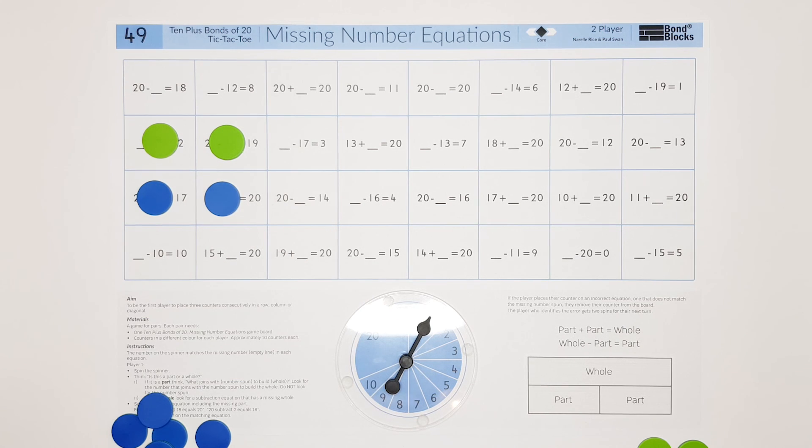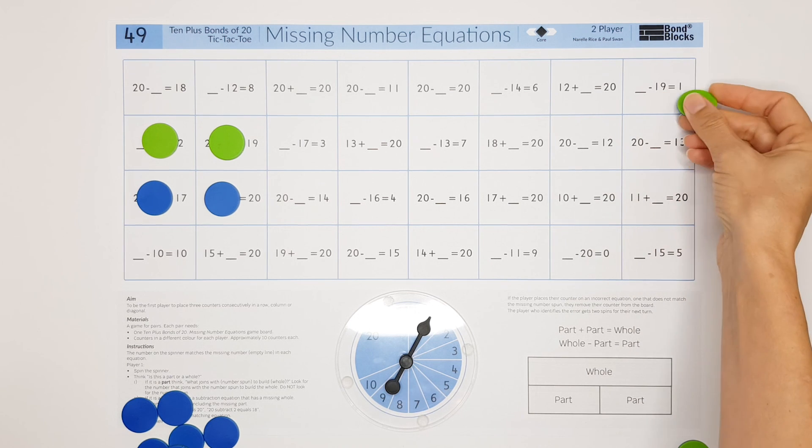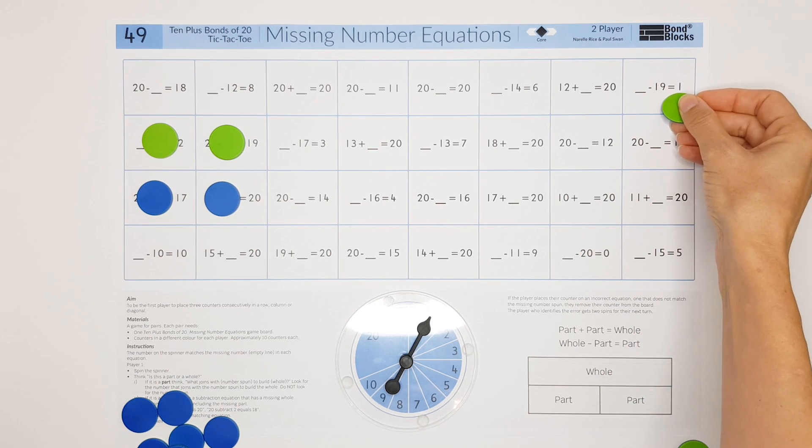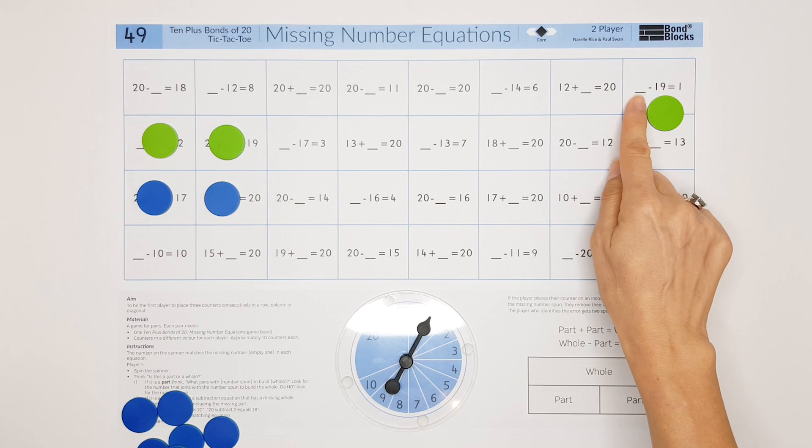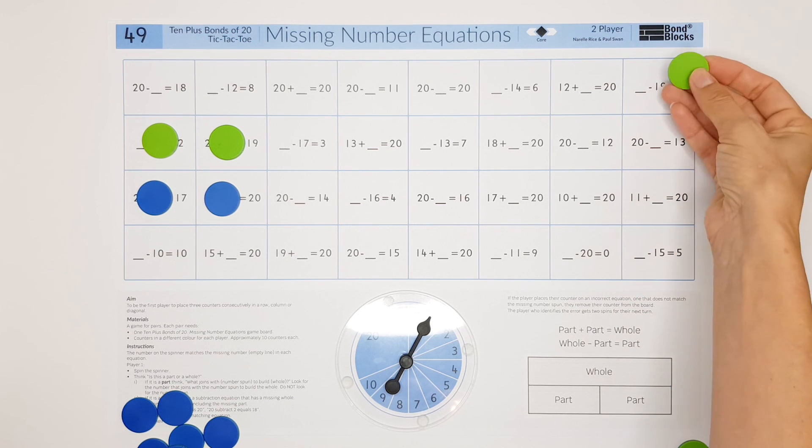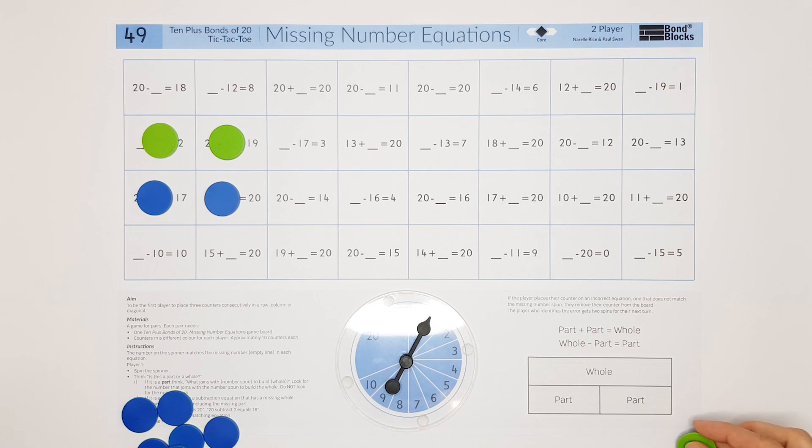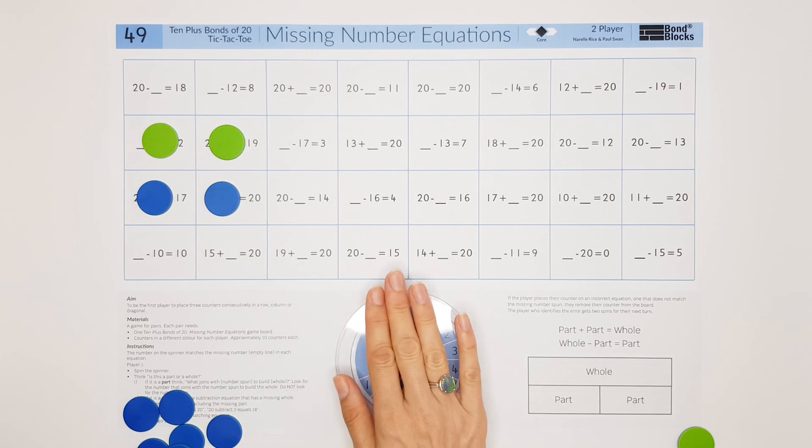This is a reasonably difficult board, so take your time. If a player does, for example, accidentally put their counter here and it's incorrect, if the other player notices and they say 'I'm sorry but that's not correct, it should be 20 subtract 19,' the green player would just remove their counter. And for picking up the mistake, the blue player gets two turns.